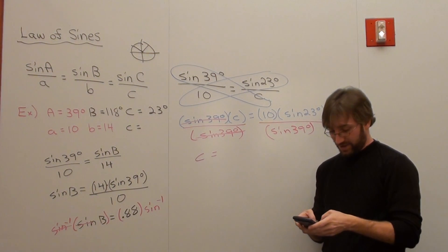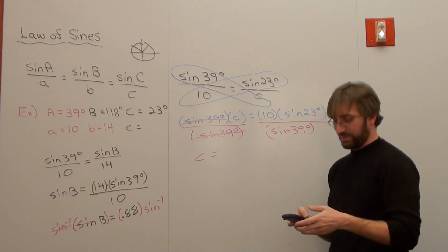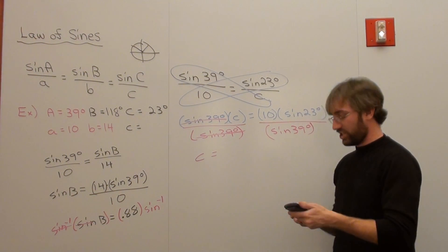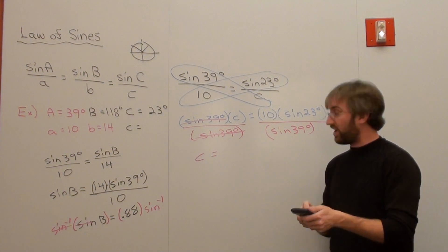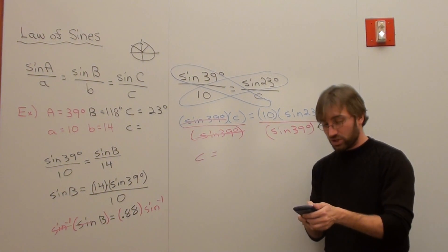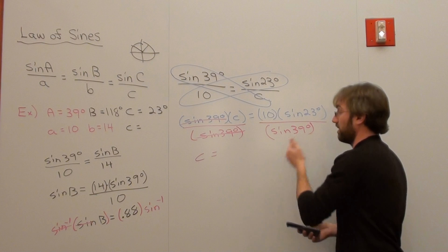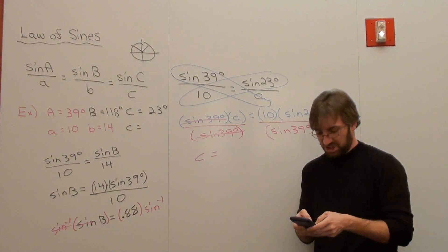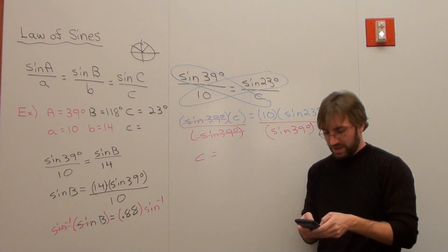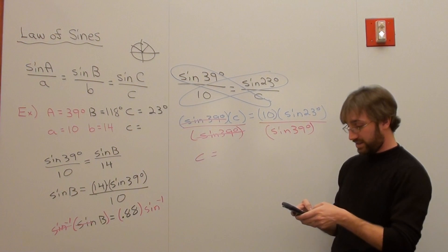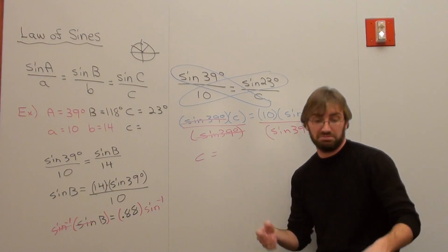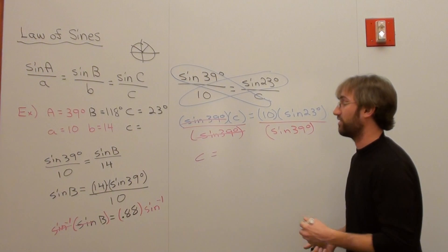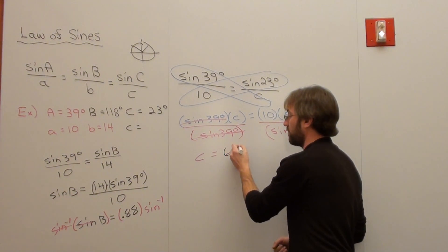The sine of 23 degrees is about 0.3907. I'm going to multiply it by 10, then divide by sine of 39 degrees. Make sure you put a set of parentheses around it when you're doing that, just to make sure. And then I get 6.2. So C is about 6.2.